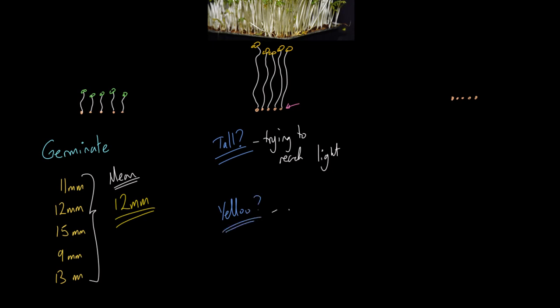Why are they yellow? Because they can't do photosynthesis — they can't synthesize glucose for respiration — and they can't produce their own chlorophyll. So there's no new chlorophyll, and they look rather yellow and unhappy.